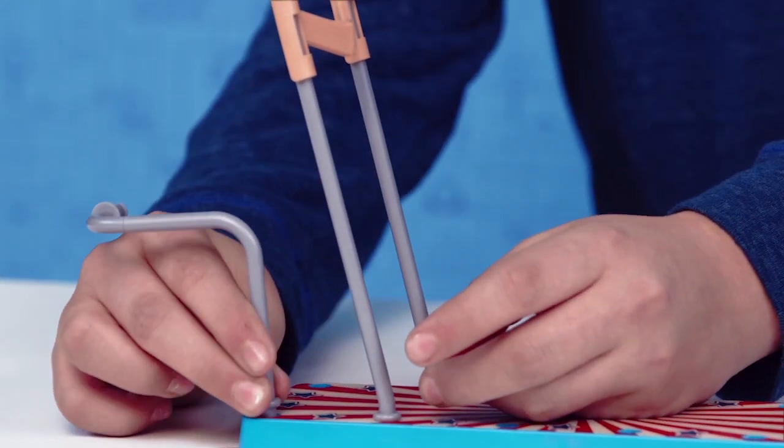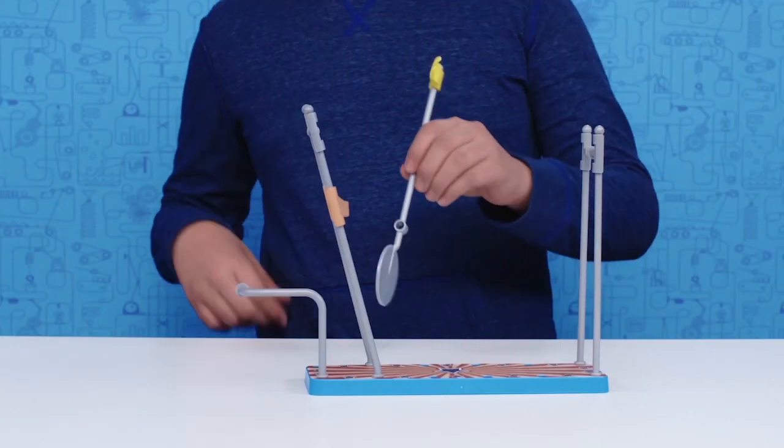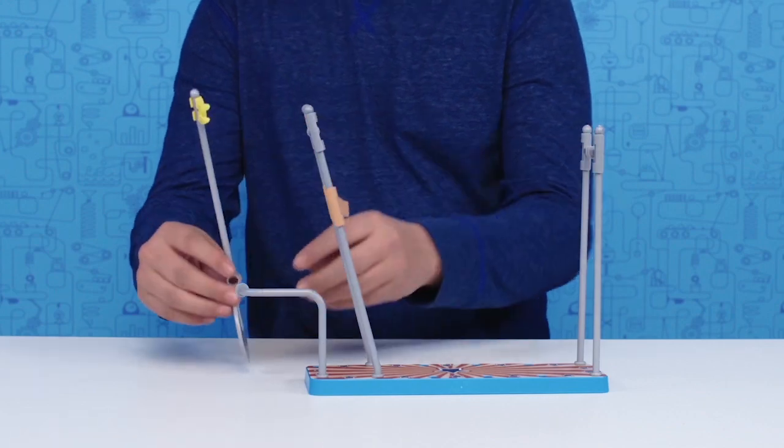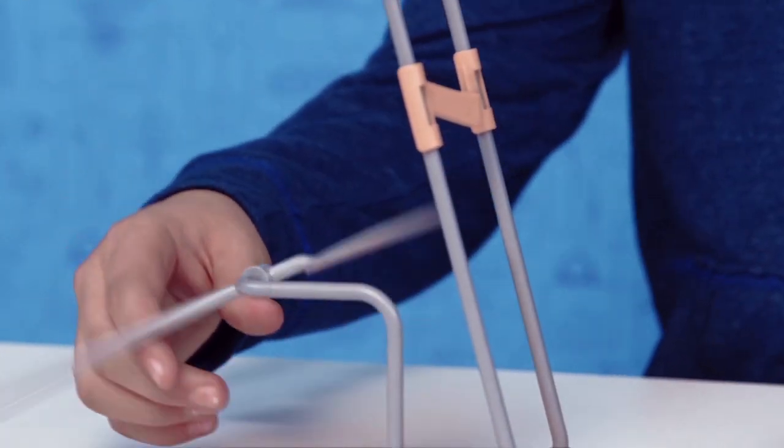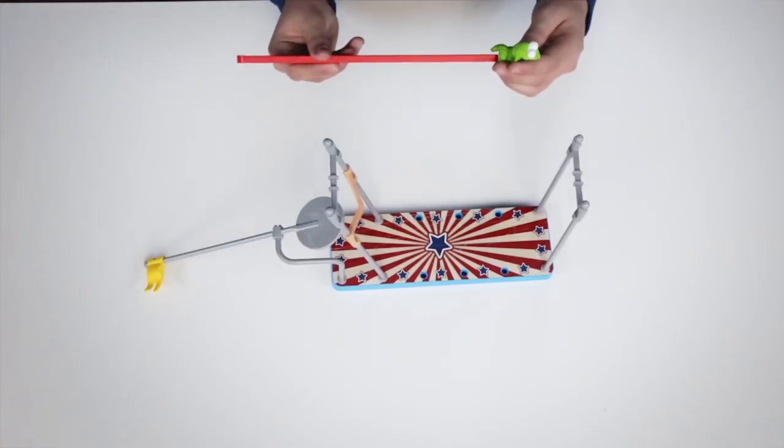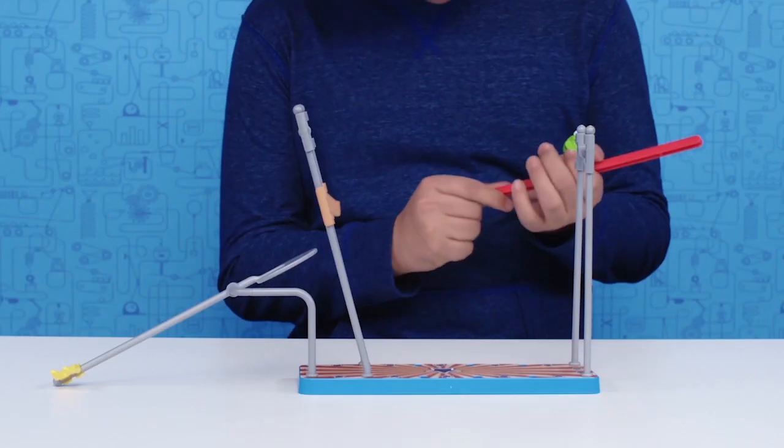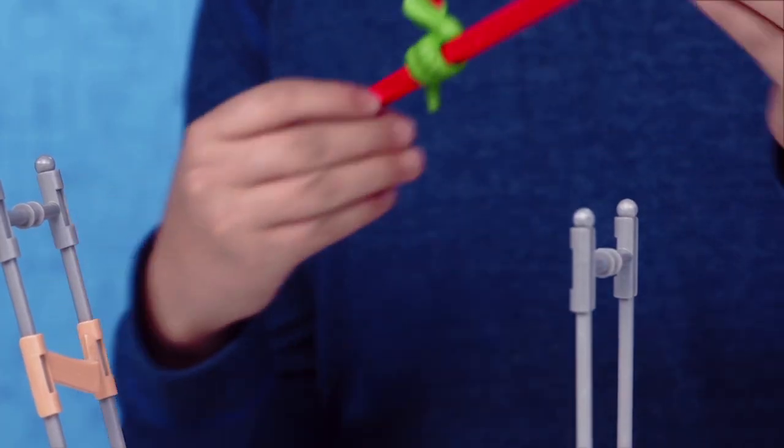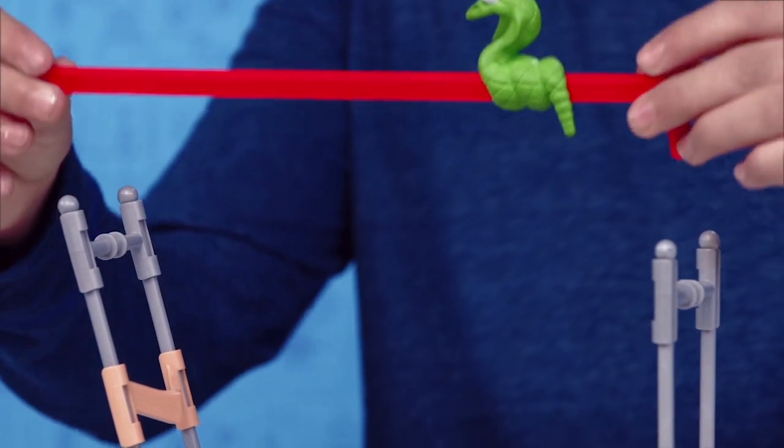After that, insert the bent brace and add the flag pole. Then, take the snake and slide him down the red tightrope to the black line. Once complete, carefully place the snake and tightrope across the gray braces.